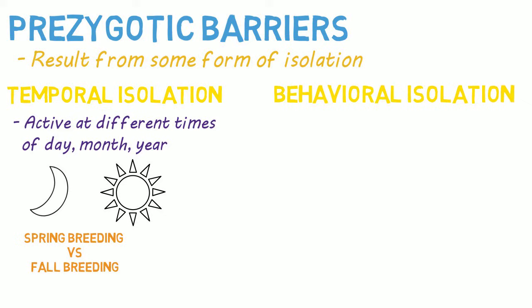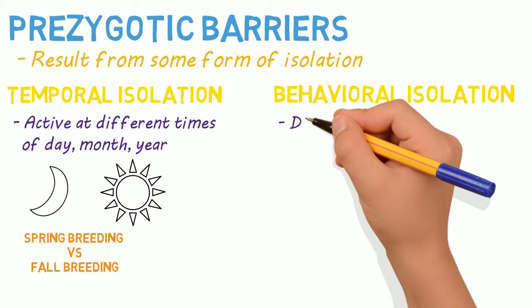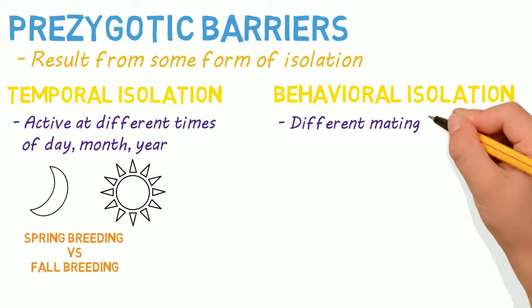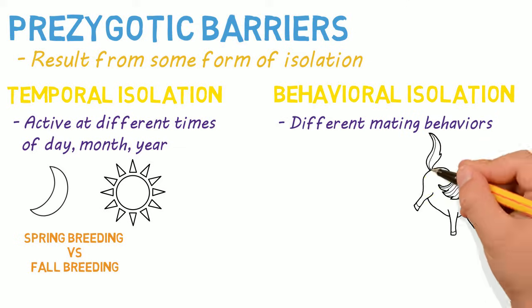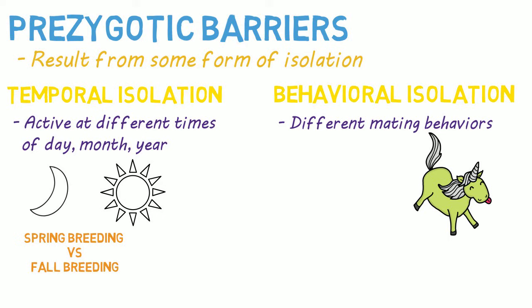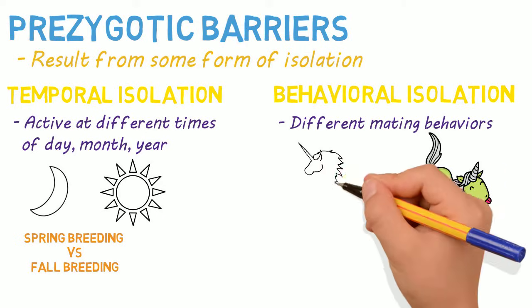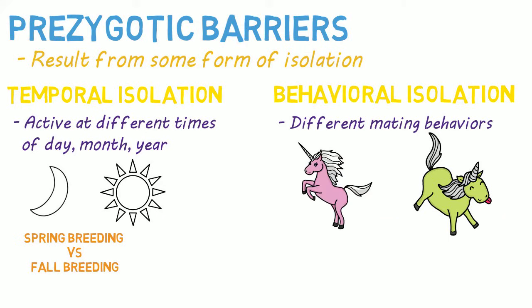Behavioral isolation is another pre-zygotic barrier. In this case, members of the same species behave differently, especially with their mating practices. These members may have slightly different mating rituals that don't attract members of the other group, thus isolating who they mate with.